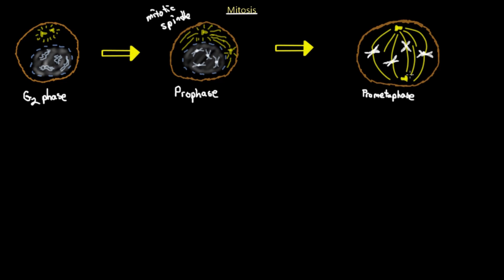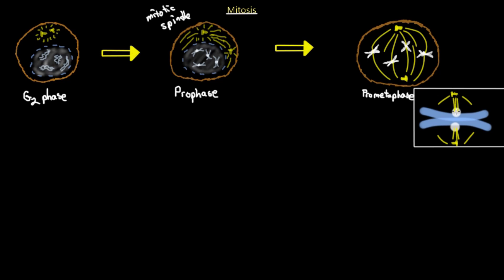In pro metaphase, the mitotic spindle grows and the microtubules attach to the chromosomes, spreading all around the former portion of the nucleus and throughout the cytoplasm, creating a bundle of microtubules that promote the process of mitosis. The chromosomes have little dots in the middle — these are called kinetochores. Each chromosome has two kinetochores.